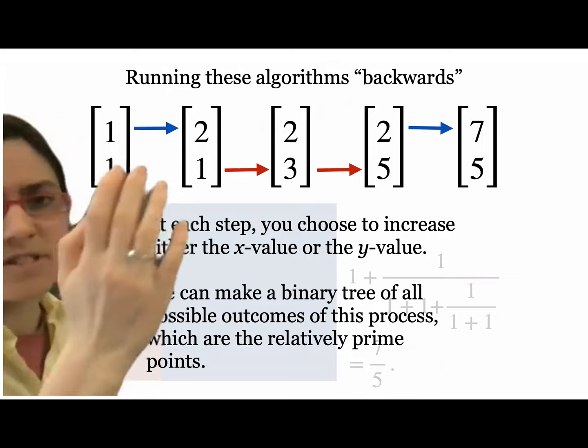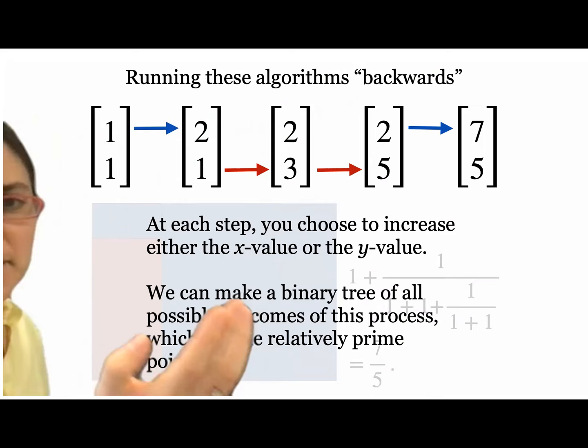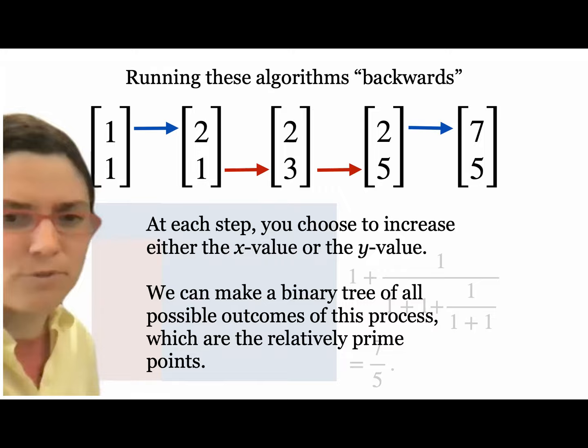At each step we choose to either increase the x value or the y value. We can make a binary tree of all possible outcomes, since there are two options at each step: increase x or increase y.